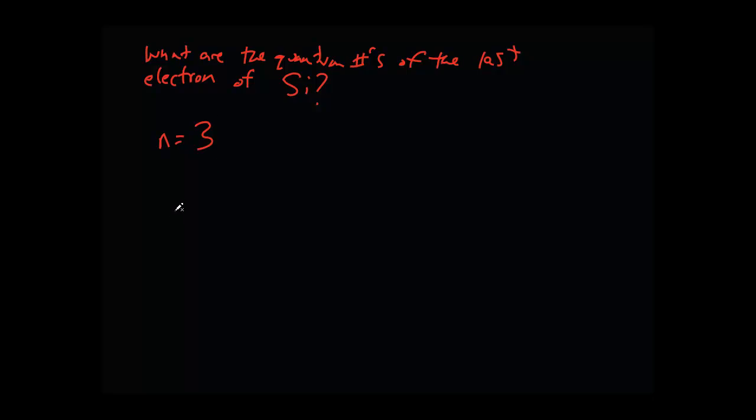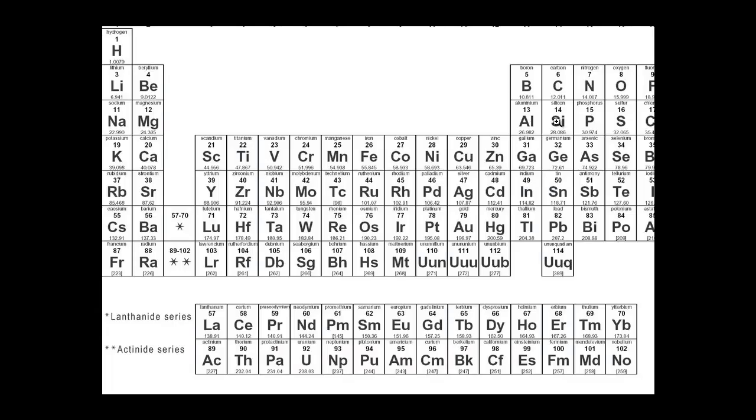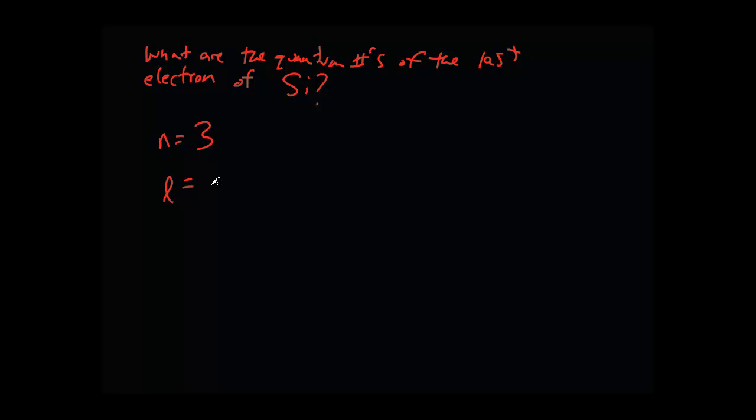And which sublevel is it in, S, P, D, or F? Let's see. Silicon electron configuration is going to be 3S1, 3S2, 3P1, 3P2. So, that means that this is going to be a P or a 1.